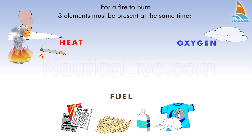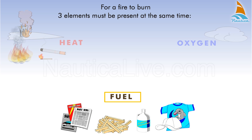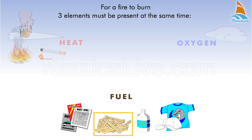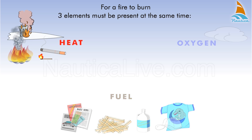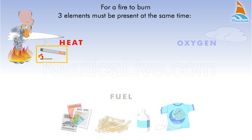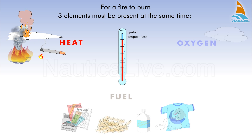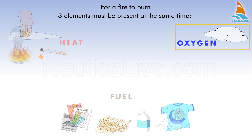Let's have a closer look at these elements. Fuel is something that will burn, such as paper, wood, plastic or cloth. Heat, for example from open flames, sparks or hot surfaces, is needed to raise the fuel to its ignition temperature, and oxygen is necessary to sustain combustion.